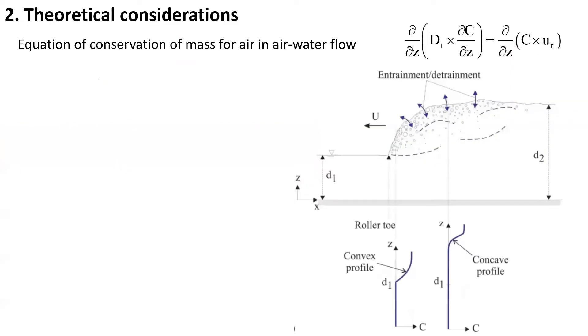Let us consider a breaking roller traveling upstream, propagating on still water. Experimental observations, which we will see shortly, highlighted a change in void fraction profile from a convex profile at the leading edge to a concave profile further downstream.